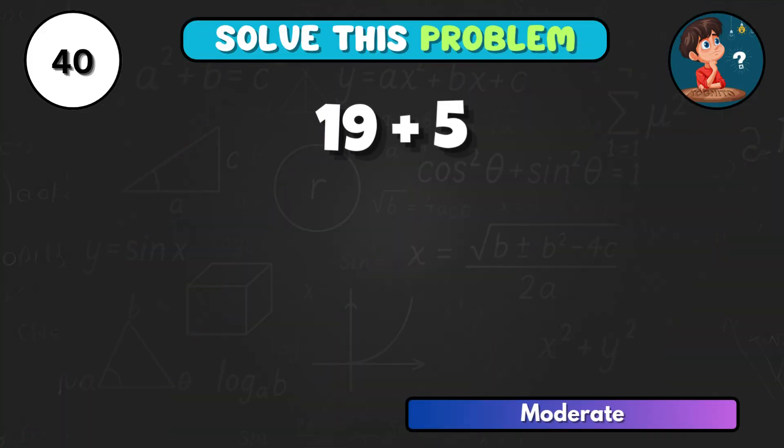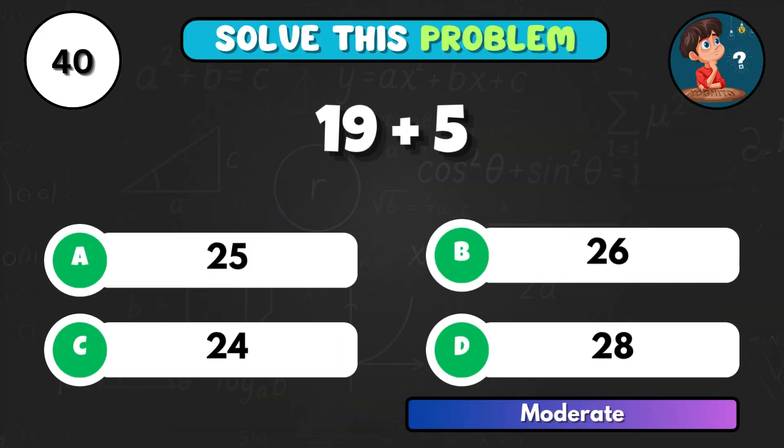19 added to 5, what's that total? The right letter is C, equals 24.